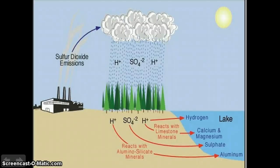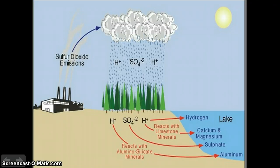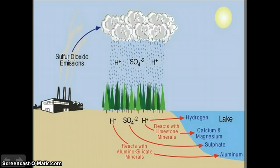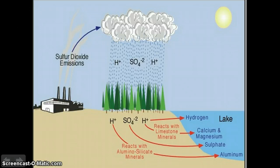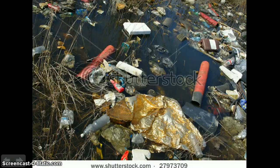Did you ever think acid would be a factor in water pollution? Well, it is. Acid precipitation is a type of rain containing acidic substances. Living in a lake as a result of acid precipitation would feel like swimming in vinegar. Acid precipitation can kill plants and animals, including wiping out entire lakes and forests. Soil that is highly acidic is not a good source for growing.